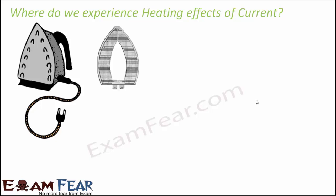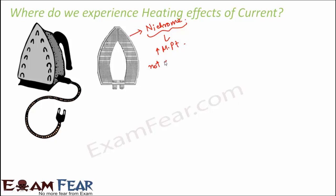If you look at the internal structure of the iron box, you will see that there is a frame shaped like this inside. This is made up of nichrome, which is an alloy — a mixture of nickel and chromium. Nichrome has a very high melting point and it does not get easily oxidized, meaning it doesn't react with oxygen very easily. These are the two advantages of nichrome, and that is why it is used inside the iron. When current passes through this nichrome, it gets heated up, and this heat is used to press your clothes.